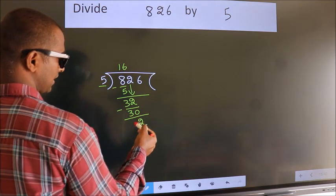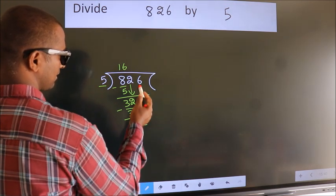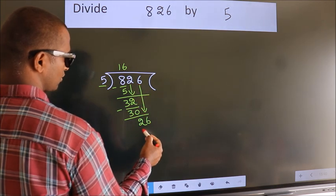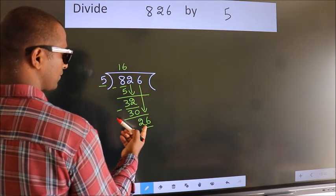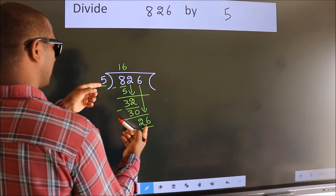After this, bring down the beside number, so 6 down. So 26. A number close to 26 in the 5 table is 5 times 5, 25.